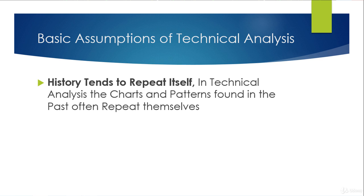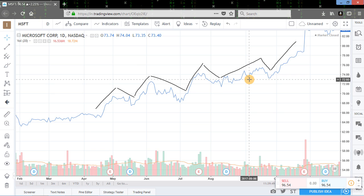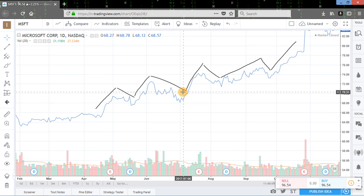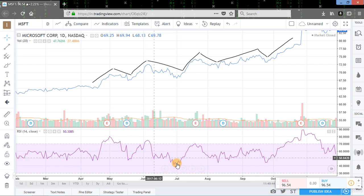The third assumption of technical analysis is that history tends to repeat itself. In technical analysis, the charts and patterns found in the past often repeat themselves. Price charts provide a graphical history of market performance. Technical analysis uses different chart patterns to analyze emotions like fear and greed, and subsequent movements give signals to understand the trends. Charts are much easier to read than a table of numbers. While reading charts, it is easy to identify the past history of market reactions before and after an important event, historical volume or trading levels, relative strength of the stock, and many other signals that various indicators give us to know the best entry and exit points for our trades.